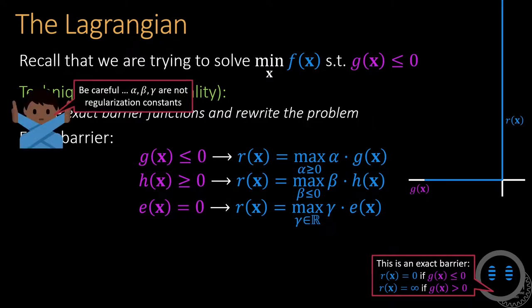Be careful to note that these helper variables are not regularization constants. There are two key differences. First, regularization constants are specified by us, whereas here we are actually optimizing over the variables alpha, beta, and gamma. Second, regularization constants need to be set to a small but non-zero value, whereas the alpha variable will either take a zero value or an infinitely large value depending on whether the constraint is satisfied or not. Thus, these helper variables are not regularization constants.